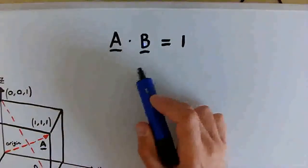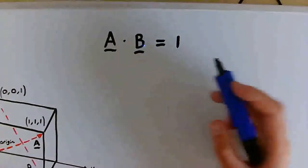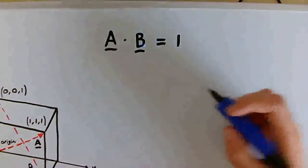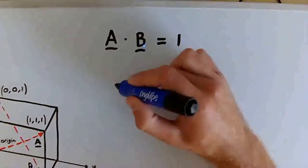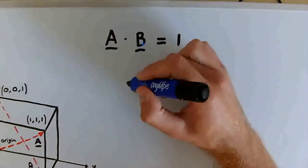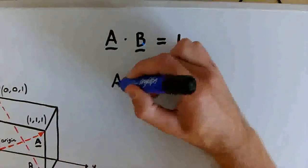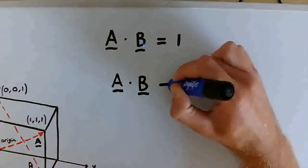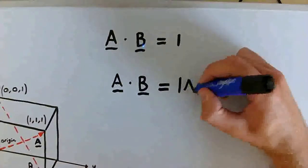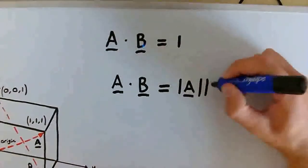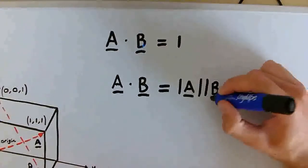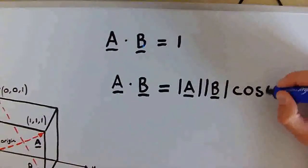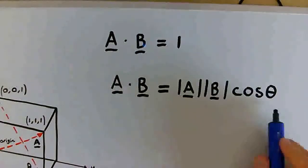So we've just found that the dot product of A and B equals 1. And now, what do we know that the dot product is also equal to in terms of A and B? If you remember from a previous video, the dot product of A and B is the magnitude of A times the magnitude of B times the cosine of the angle between the vectors A and B. And it's this angle that we're interested in.